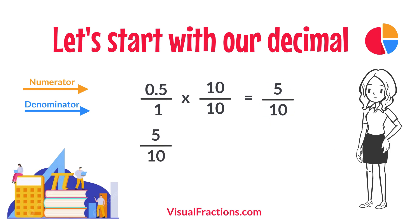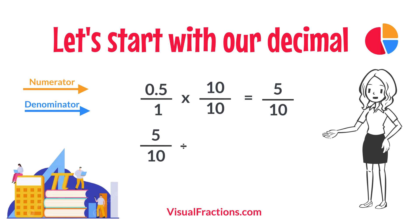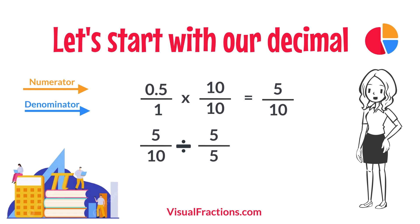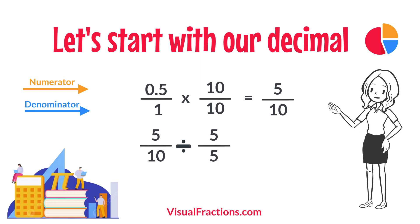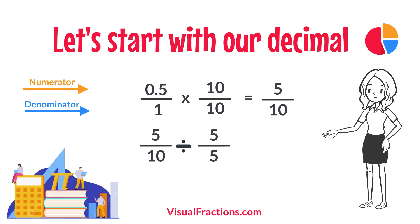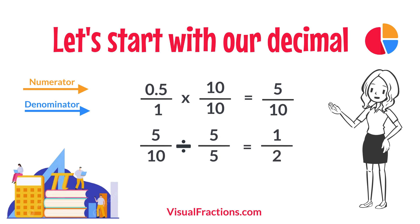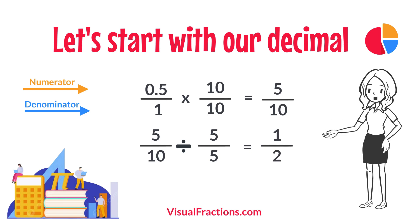Next, we simplify. Both the numerator and the denominator in 5 tenths are divisible by 5, the greatest common divisor. Divide 5 by 5 to get 1 and divide 10 by 5 to get 2. So, 5 tenths simplifies neatly to 1 half.